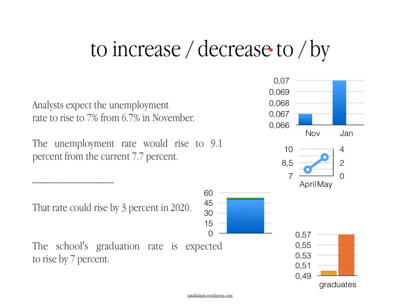Now we're going to look at the difference between saying that the number has increased 'to' or increased 'by.' If you say 'analysts expect the unemployment rate to rise to 7% from 6.7% in November,' it means that in November it was 6.7%, and in January, for example, the figure will reach 7%. So when you say 'rise to,' 'increase to,' or 'decrease to,' you mean that the final result you get is that number or figure. For example, the unemployment rate would rise to 9.1% from 7.7%, meaning it was 7.7% and the final figure will be 9.1%.